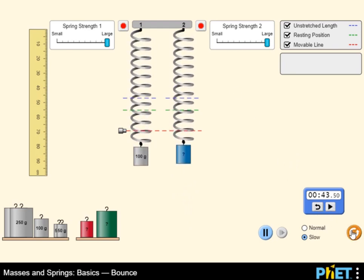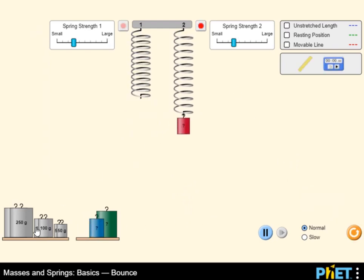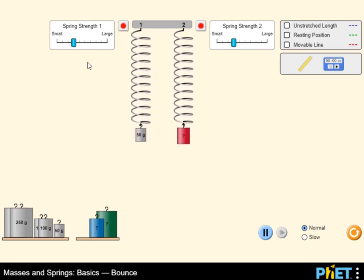You can use the different settings to show the unstretched length, resting position, and the movable line in the simulation.